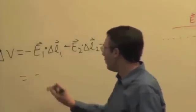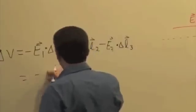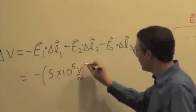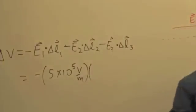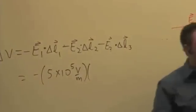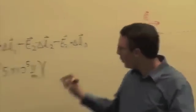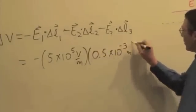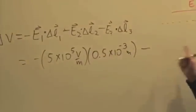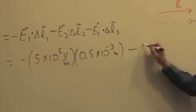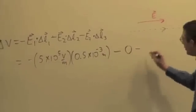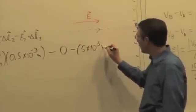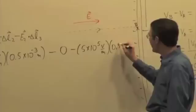And so we have E1, the x component of E1 is five times ten to the fifth volts per meter. And the distance across that first region is half a millimeter, point five times ten to the minus three meters. Minus, what's E2? E2 is zero. And then minus five times ten to the fifth volts per meter times another half millimeter distance.